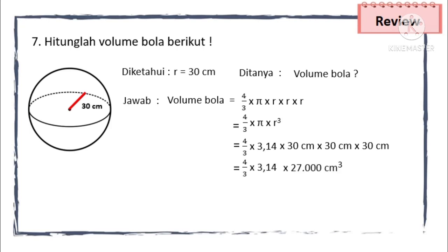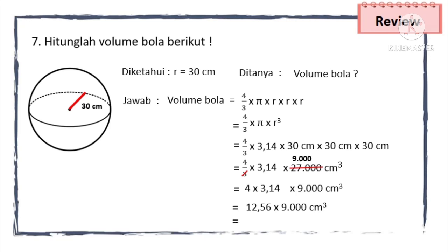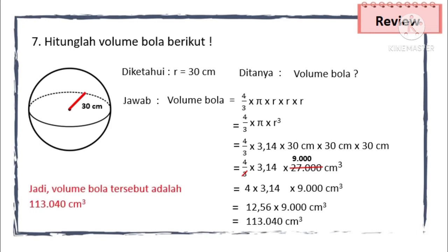Yang 30-nya kita kalikan dulu: 4/3 × 3,14 × 27.000 cm kubik. 27.000 dibagi 3 menjadi 9.000 cm kubik, maka 4 × 3,14 × 9.000 cm kubik = 12,56 × 9.000 cm kubik. Hasil akhirnya 113.040 cm kubik. Jadi, volume bola tersebut adalah 113.040 cm kubik.